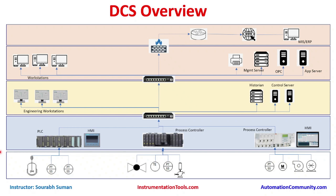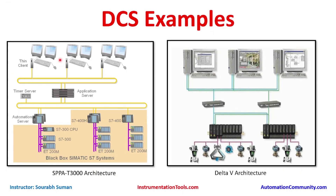Now let's look at some DCS solution examples. Here we can see a sample architecture of SPPA-T3000, which is a DCS solution by Siemens. In the field, it starts from the IO cards — the ET200 modules — which are connected to the S7-300 CPU, or it could be an S7-400 or S7-410. All automation-related things are then connected to the automation server.